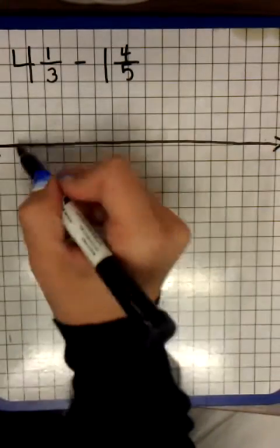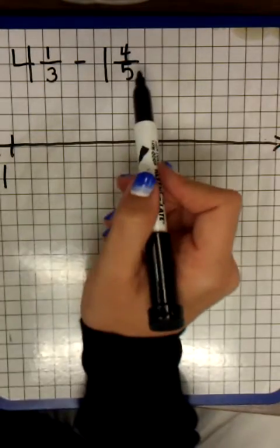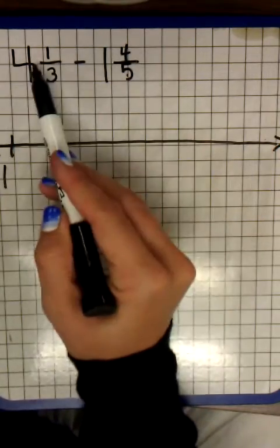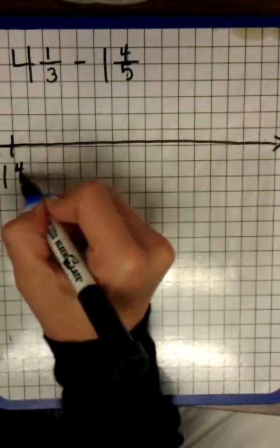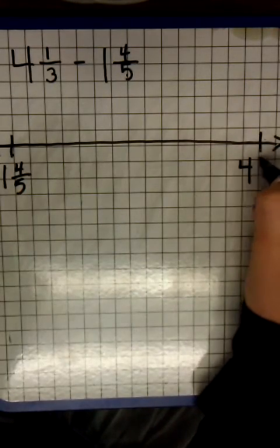And with subtracting an open number line, my second number goes first because I'm essentially finding the difference between these two. So I'm going to be counting on from here to here. So it's one and four fifths and I'm going to be counting on to four and one third.